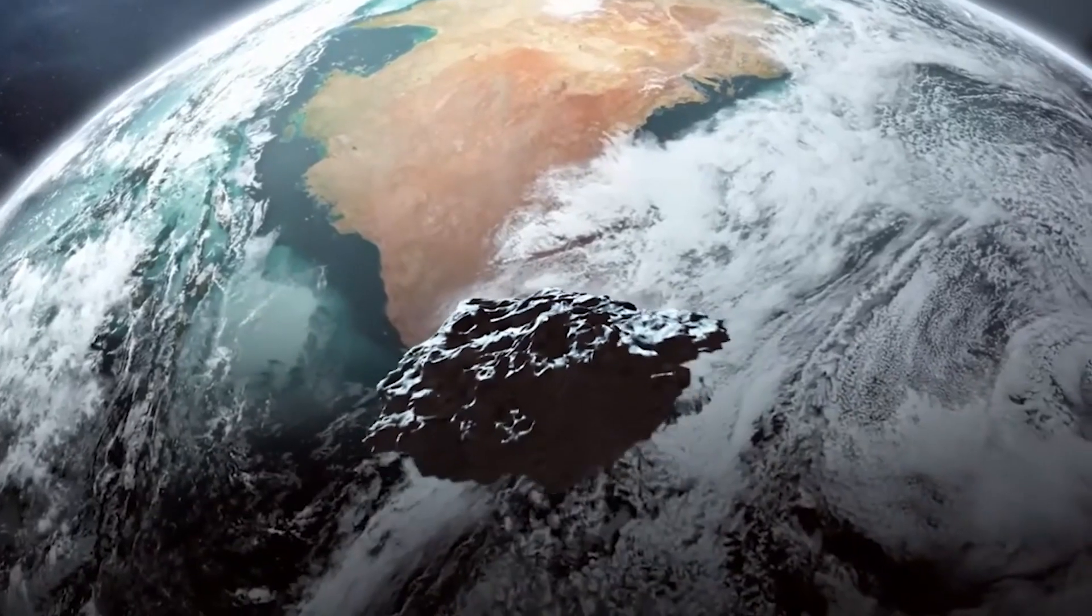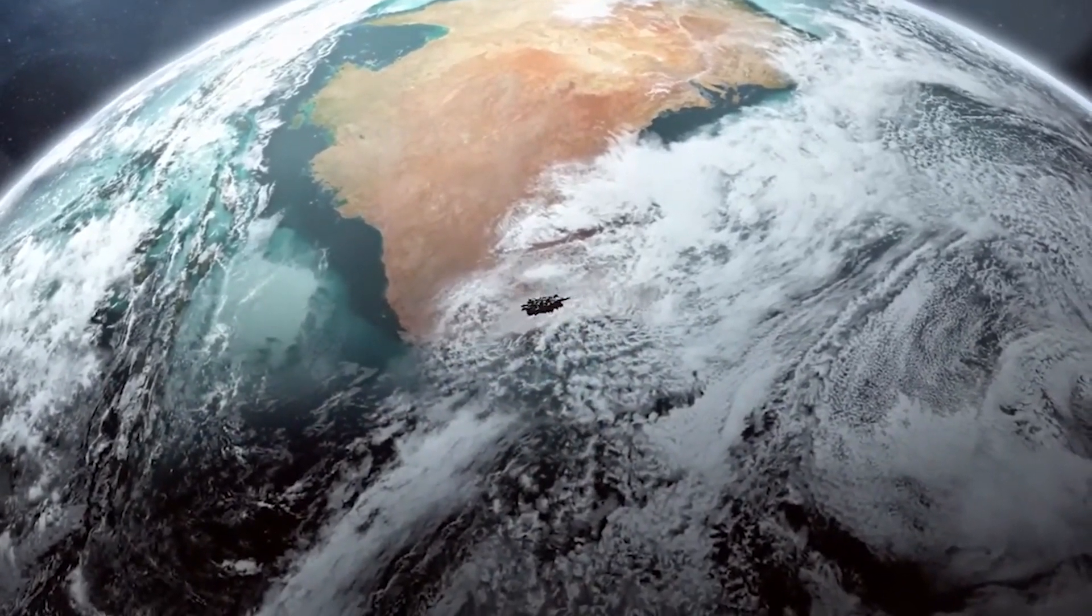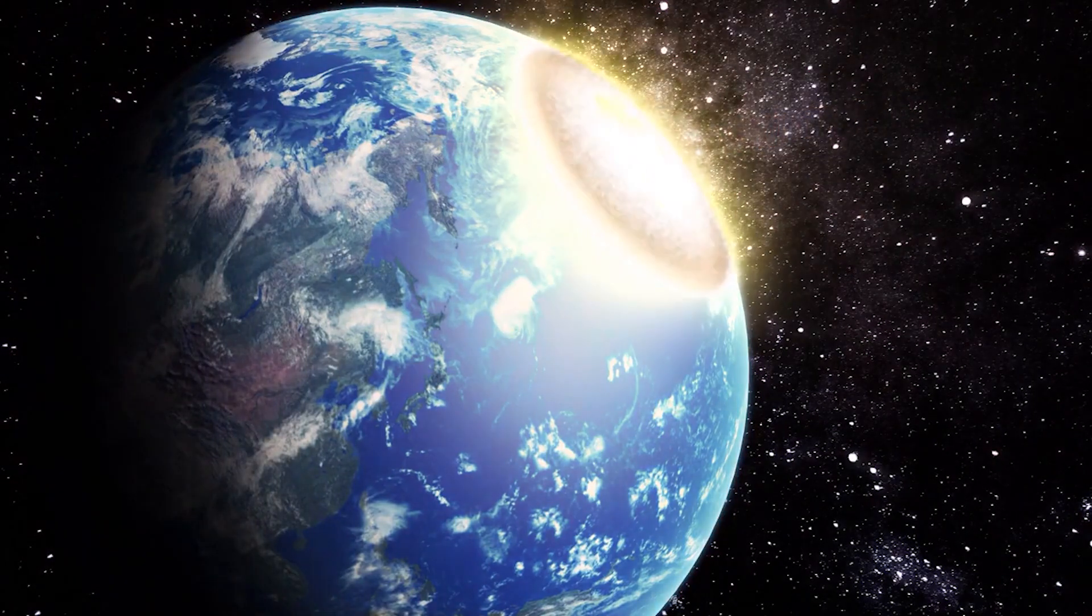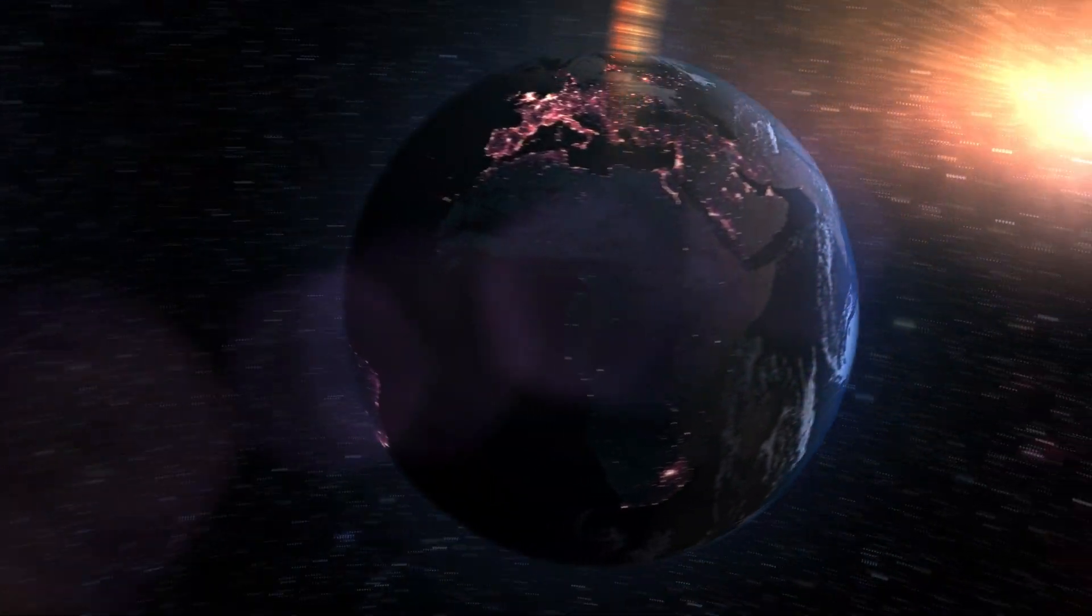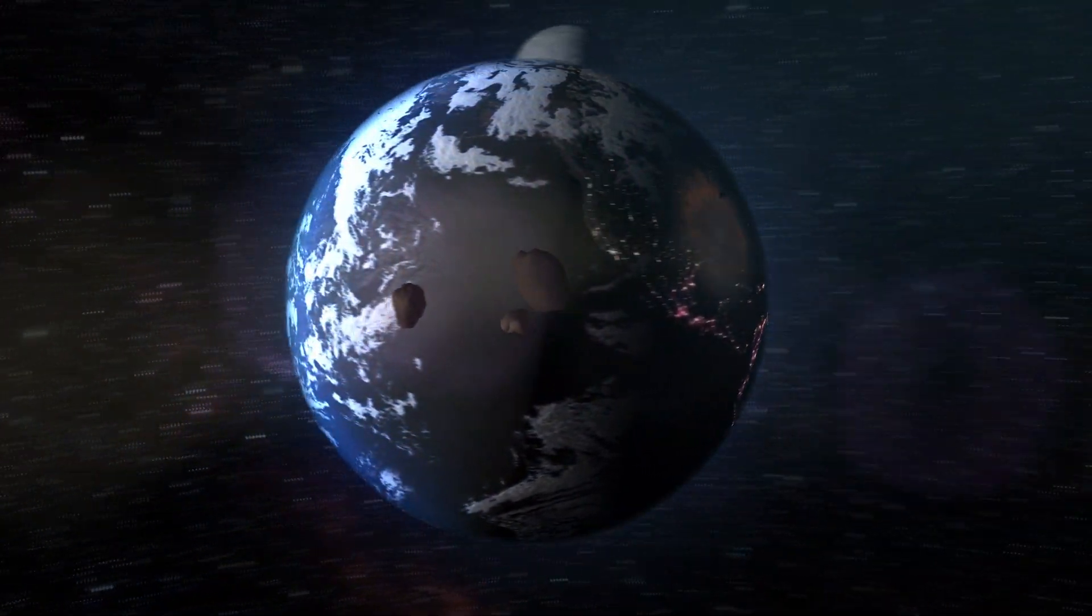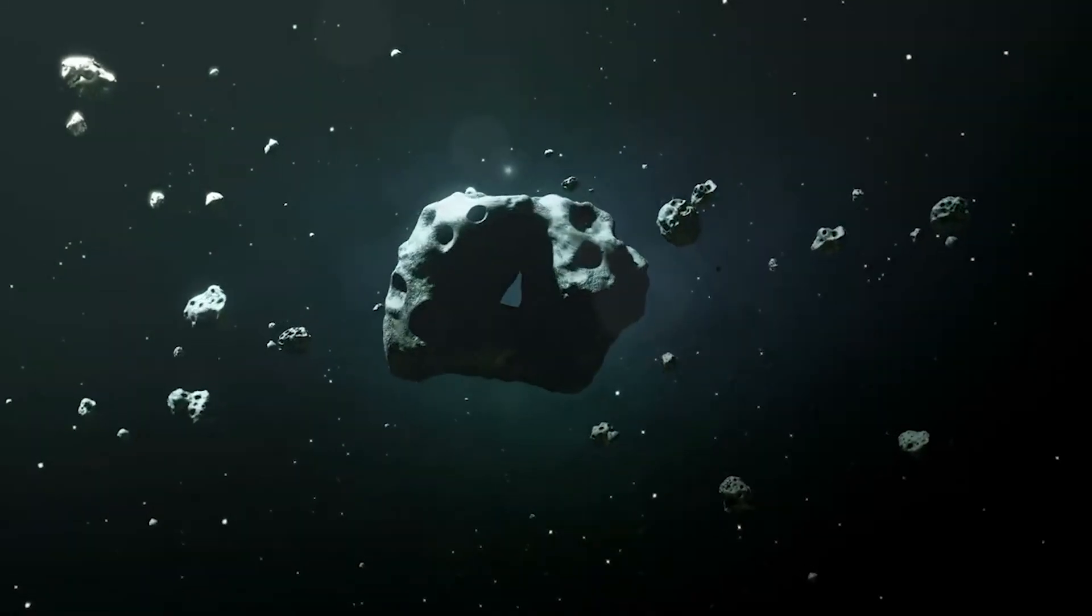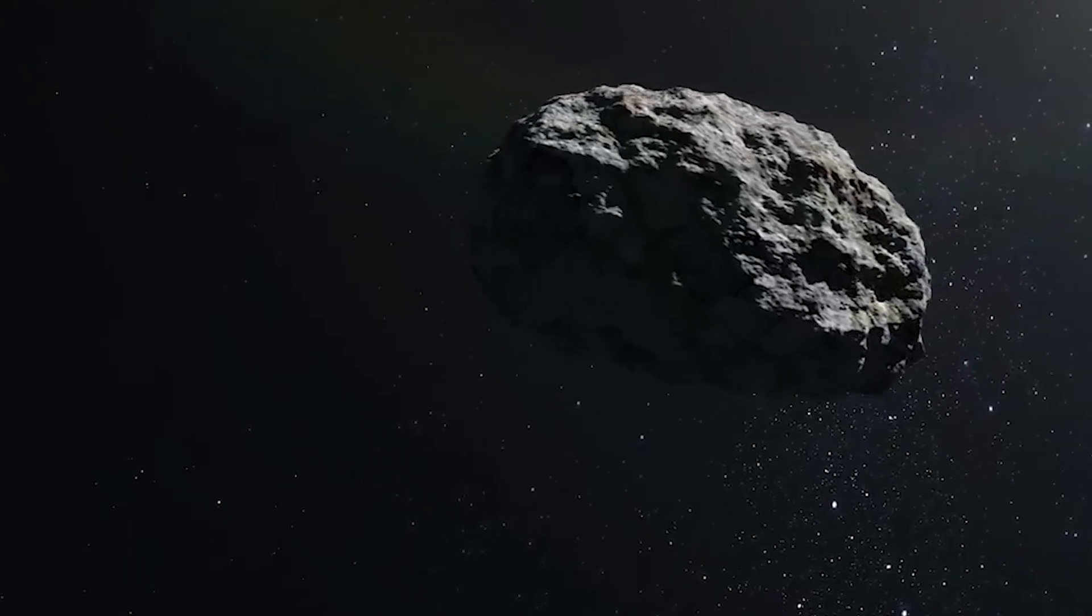But observations of Apophis' orbit during a distant flyby in March 2021 led astronomers to conclude that the asteroid poses no threat for at least the next century. Initially, scientists were unsure whether the passage of Apophis would result in a collision with Earth. The asteroid sat at the top of the European Space Agency's impact risk list of PHAs and NASA's century risk table for 17 years and was only removed in 2021.